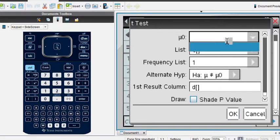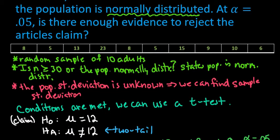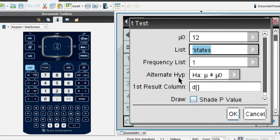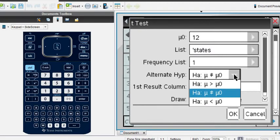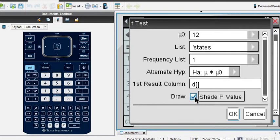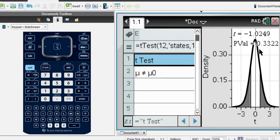For this one we have the actual data, so I'm going to select okay. The mu naught is always your null hypothesis, so the mu naught is going to be that we're starting with it equal to 12. The list is going to be the variable states. The alternative hypothesis has to match your alternative hypothesis, that's the not equal to. I'm going to select draw so that will shade the p-value.